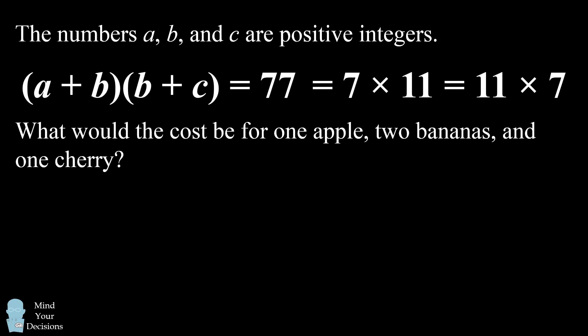We want to find out the cost for 1 apple, 2 bananas, and 1 cherry. We can write this out as A plus 2B plus C. We can split up 2B into two terms of B. And then we can group this equation as A plus B plus B plus C. So the question is asking, what is the sum of the factors A plus B and B plus C?